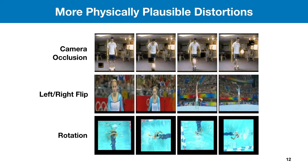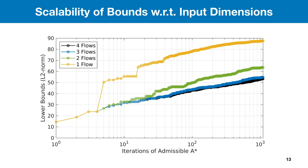Future work includes taking into consideration more physically plausible distortions, such as camera occlusion, left or right flip, and frame rotation. We can see that camera occlusions are very similar to the safe perturbations we covered before. Finally, we show the scalability of the bounds in terms of the input dimensions. Intuitively, a smaller input dimension contributes to a faster convergence of the bounds.